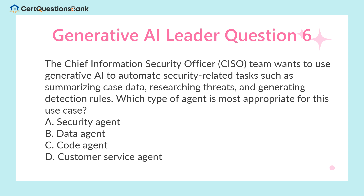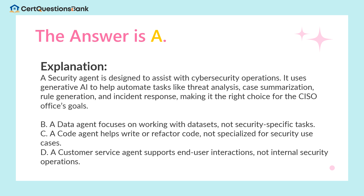The chief information security officer (CISO) team wants to use generative AI to automate security-related tasks such as summarizing case data, researching threats, and generating detection rules. Which type of agent is most appropriate for this use case? A. Security agent. B. Data agent. C. Code agent. D. Customer service agent. The answer is A.